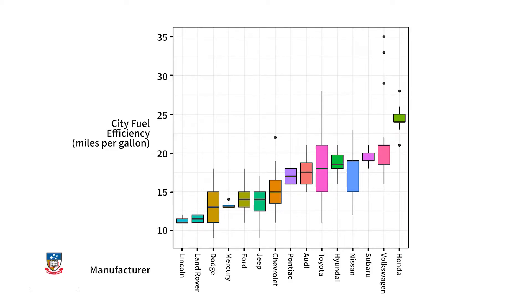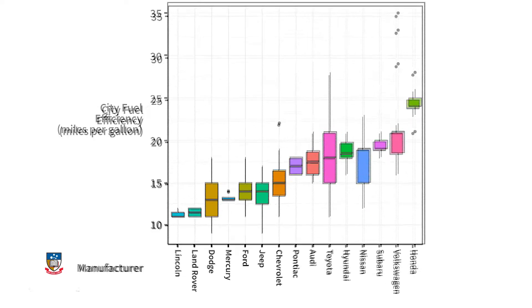Next, we have location. Box plots are good for this one. The line in the middle of each colored rectangle is the median. Here are box plots of city fuel efficiency for each manufacturer in the MPG dataset, ordered by median fuel efficiency. We can see that Honda cars have the highest fuel efficiency, while Lincoln cars have the lowest.